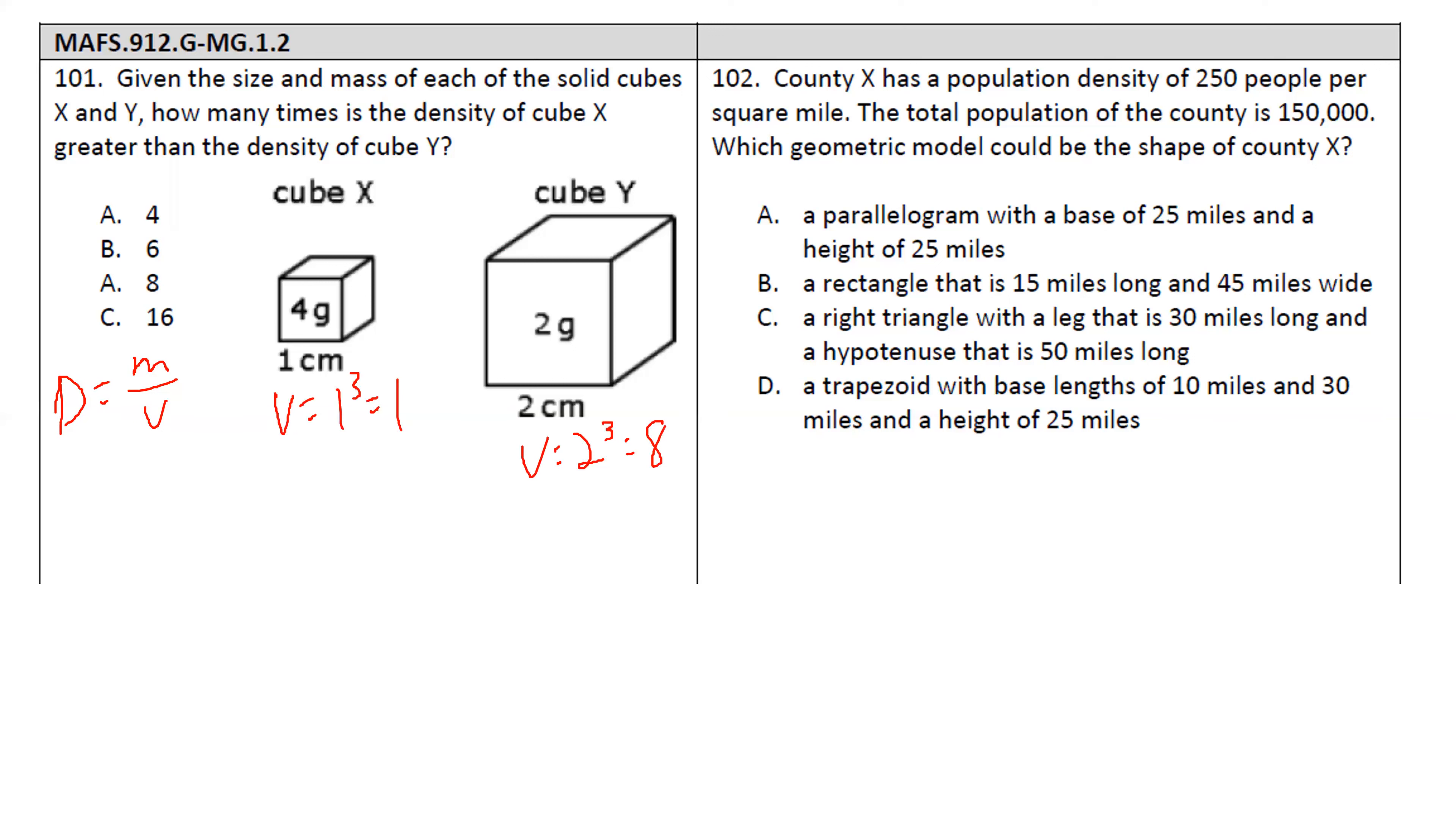So for density, this is 4 over 1, which is just 4. For this one, density is 2 over 8, which is one fourth. So how much bigger is 4 than one fourth? 16 times. You have to do 16 times one fourth to get 4.